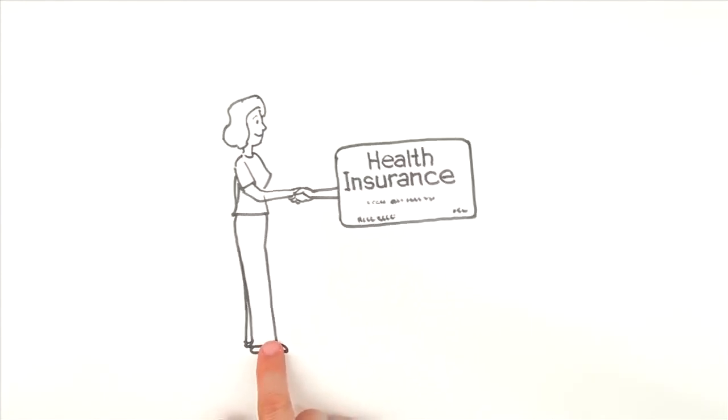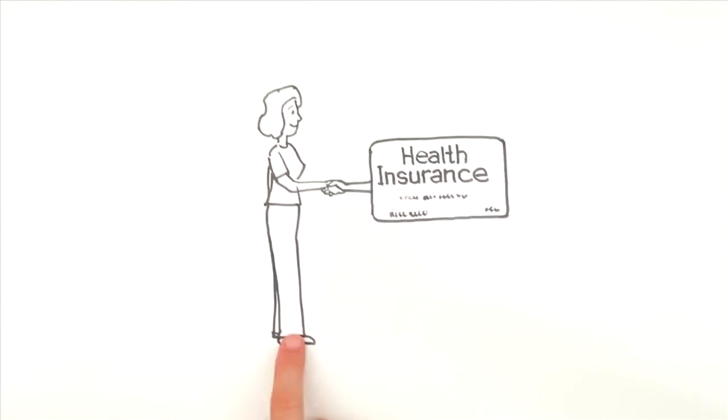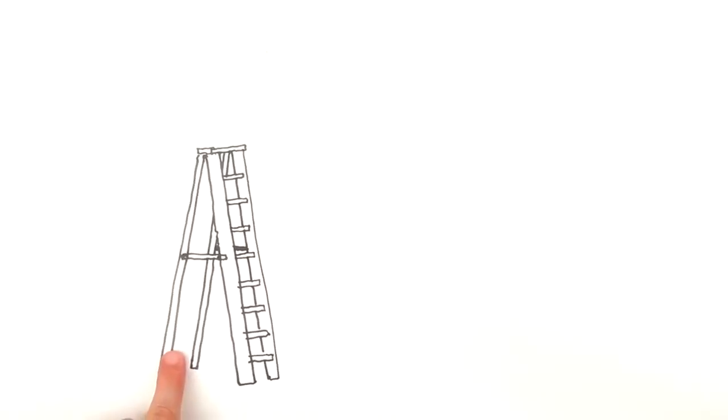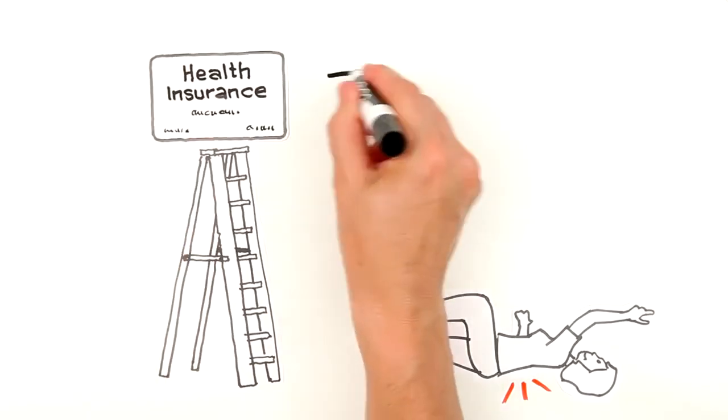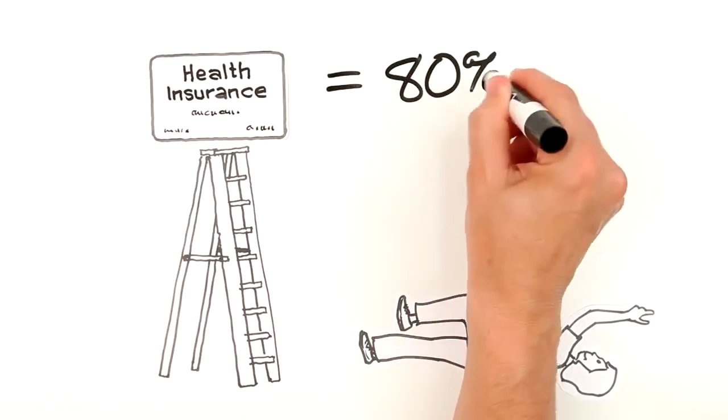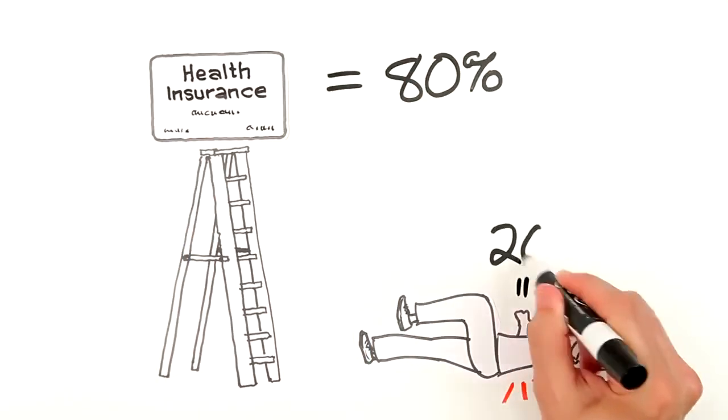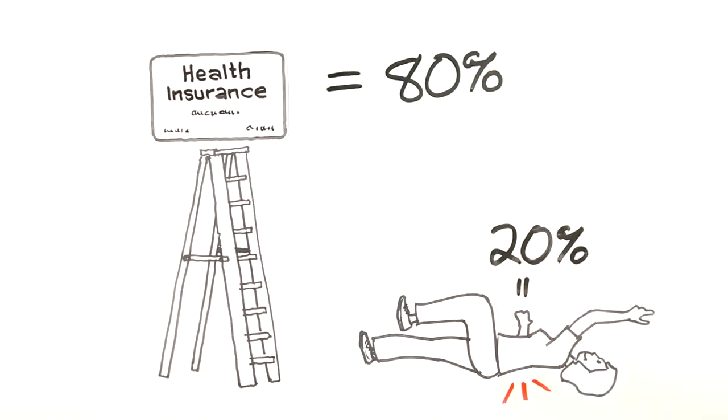Some plans have co-insurance, which is the way you and your health insurer share the costs of your care after you've met your deductible. For example, if Gina is injured and she's met her deductible for the year, her health plan will pay 80% of the cost of the rest of her covered expenses, leaving Gina responsible for the remaining 20%.